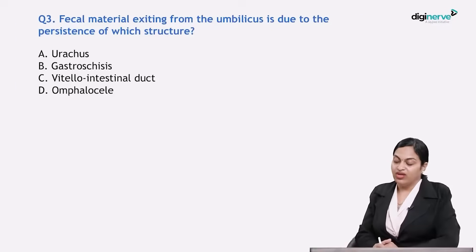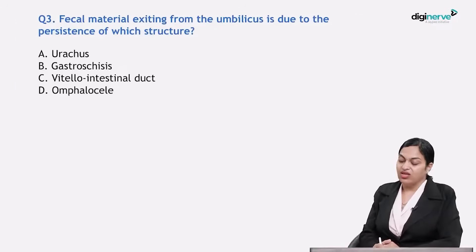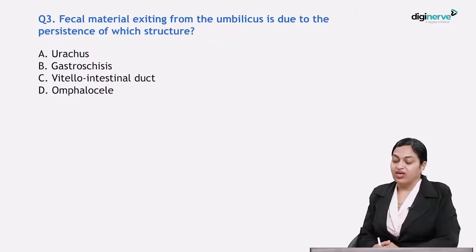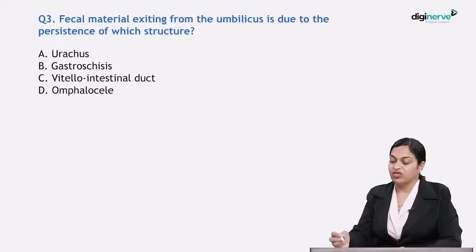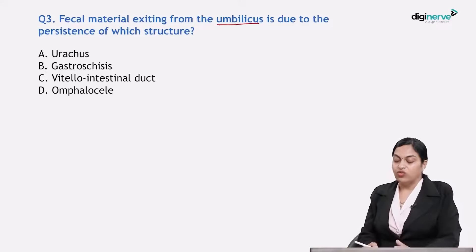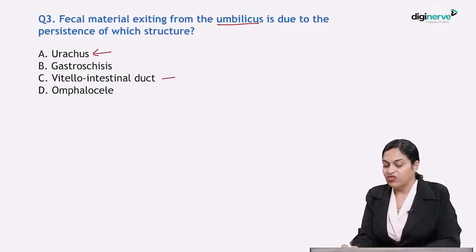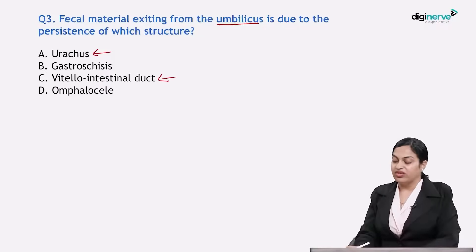Moving on to the third question: fecal material exiting from the umbilicus is due to persistence of which structure? Two embryological structures relate to the umbilicus here — the urachus and the vitelointestinal duct.